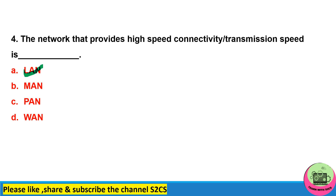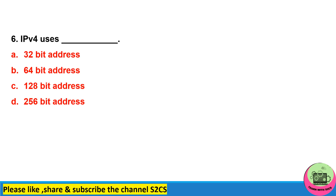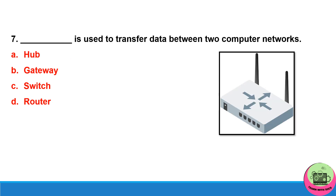Fifth one: dash is called networks of networks — you are familiar with this term — that is the internet. Sixth: IPv4, that is Internet Protocol version 4, uses which address scheme? It uses a 32-bit address scheme.